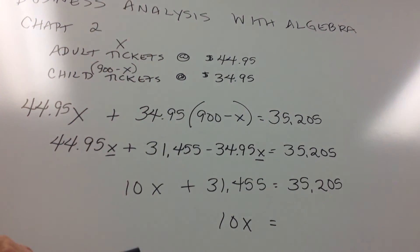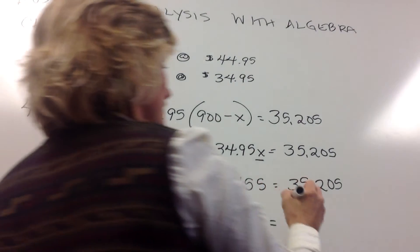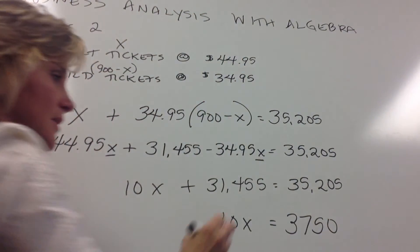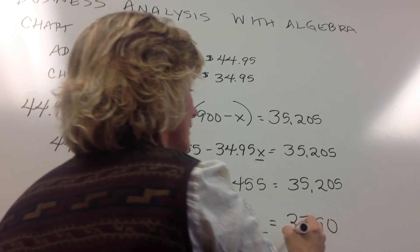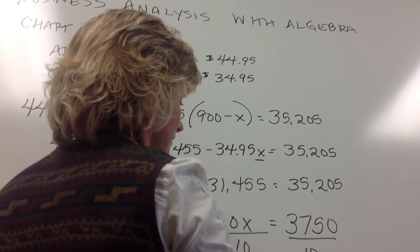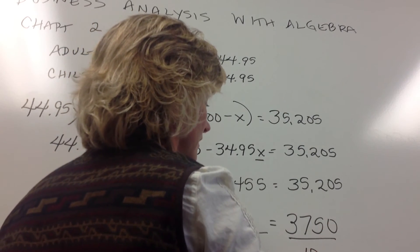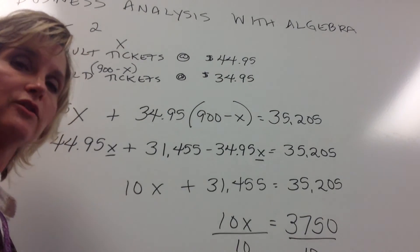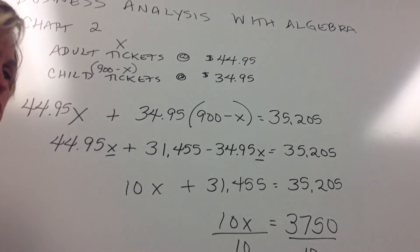So then $35,205 minus $31,455 gives us $3,750. Divide both sides by 10. And then so our final answer is the adult tickets. There were 375 adult tickets sold.